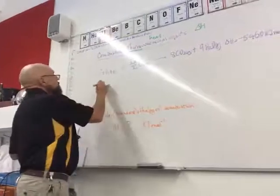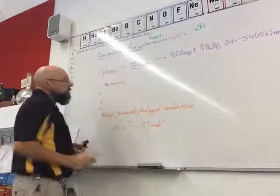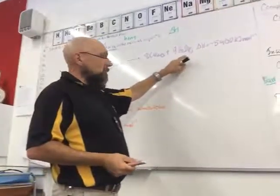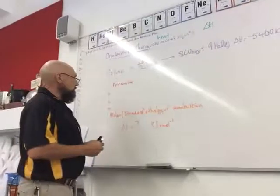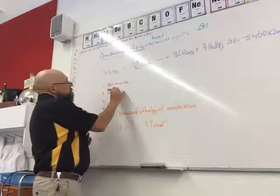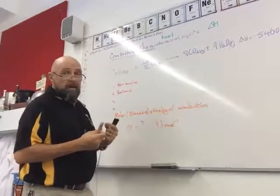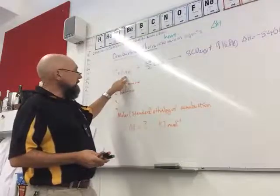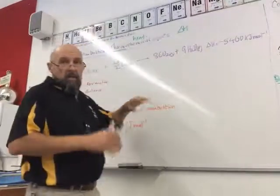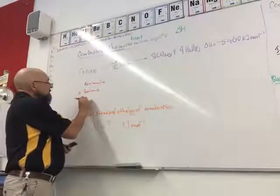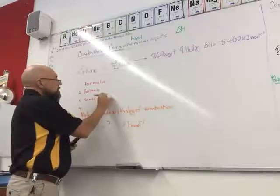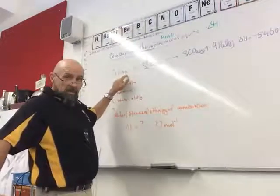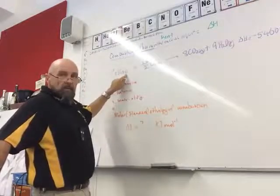First thing is you have to make sure that you get the correct formula for all the chemicals. So here we've got octane, oxygen, carbon dioxide, and water. The correct formula is important. The next thing you have to do is balance the equation in terms of number of atoms on the left and right hand side. We've got 8 carbons here and 8 carbons here, we've got 18 hydrogens and 19 hydrogens on the right hand side.